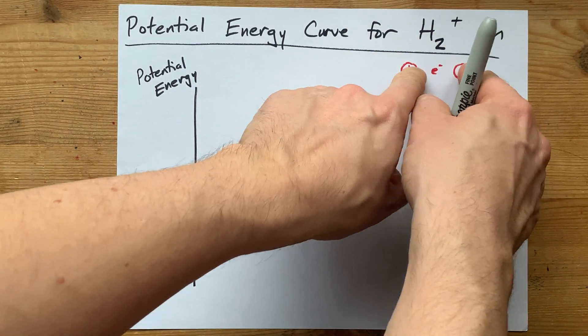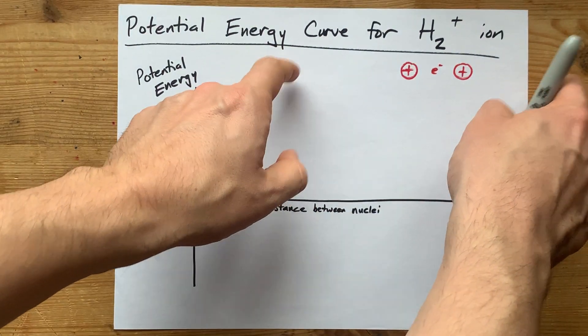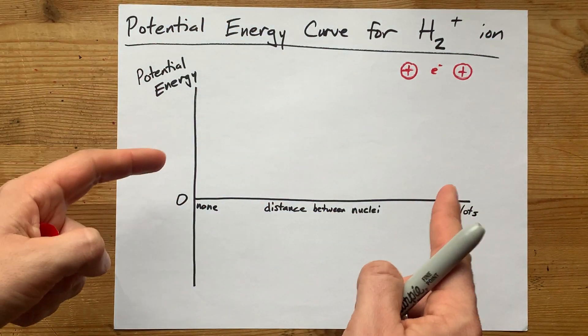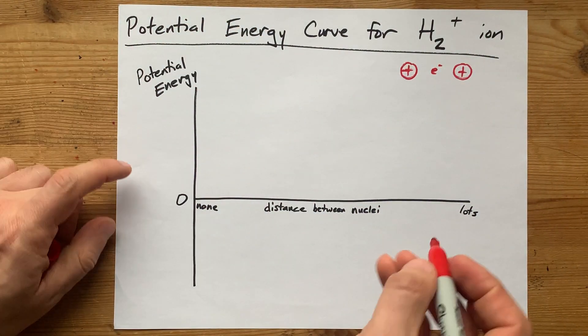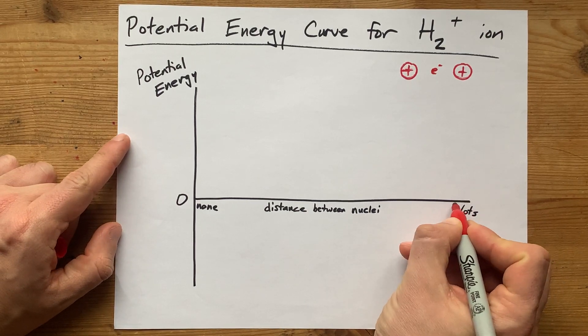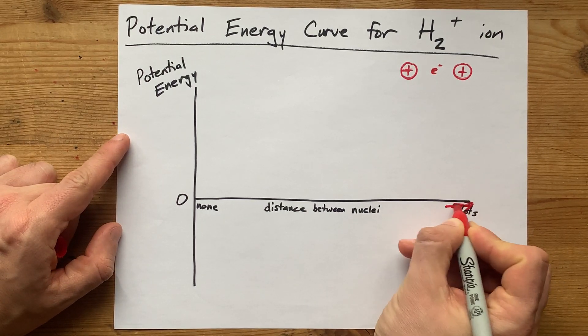when these pluses are as far apart as possible, how much are they interacting? The answer is they're hardly interacting at all. So, I want this asymptote over here to be zero.